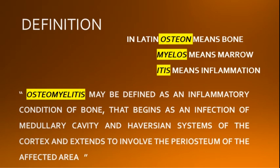Osteon in Latin means bone, myelos means marrow, and itis means inflammation. Therefore, osteomyelitis is an inflammation of the medullary portion of bone, bone marrow, or cancellous bone. However, the process is rarely confined to only the medulla — it involves cortical bone and periosteum as well. Therefore, osteomyelitis may be defined as an inflammatory condition of bone that begins as an infection of the medullary cavity and Haversian systems of the cortex, extending to involve the periosteum of the affected area.